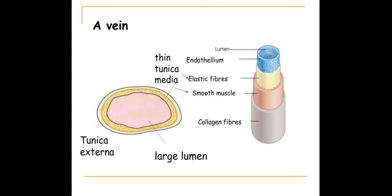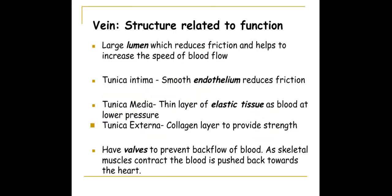The last vessels to be aware of are the venules and veins. A vein has a very large lumen because the blood is under low pressure — we no longer need to maintain high blood pressure. It has a thin tunica media with a lower percentage of elastic fibre and smooth muscle, but we still have the tunica externa to give the vein strength. Veins have valves to prevent the backflow of blood.